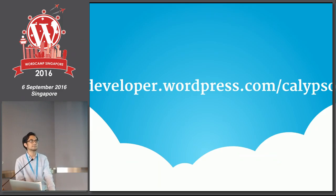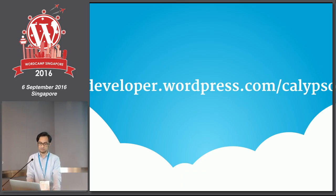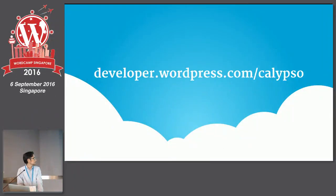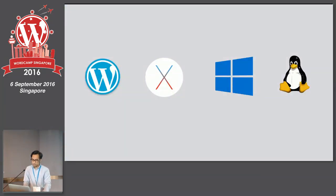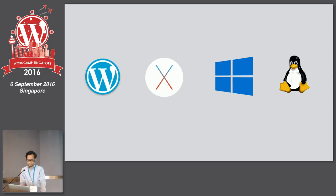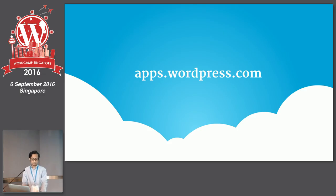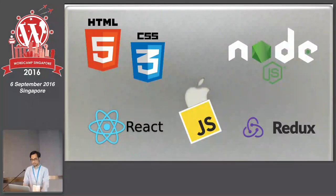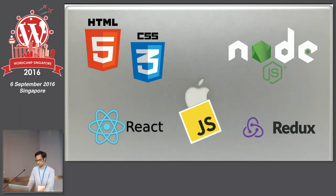If you'd like to read about the announcement for Calypso — it's not exactly that new, it was released about one year ago — you can read more at this URL. Calypso is also available as OS X, Windows, and Linux apps. There's also the web version, which can be accessed on wordpress.com. If you'd like to try out the apps, you can go to apps.wordpress.com and download from there. The technology behind it is that it's 100% a JavaScript app. It uses Node.js, React for the user interface library, and Redux for the state container library.